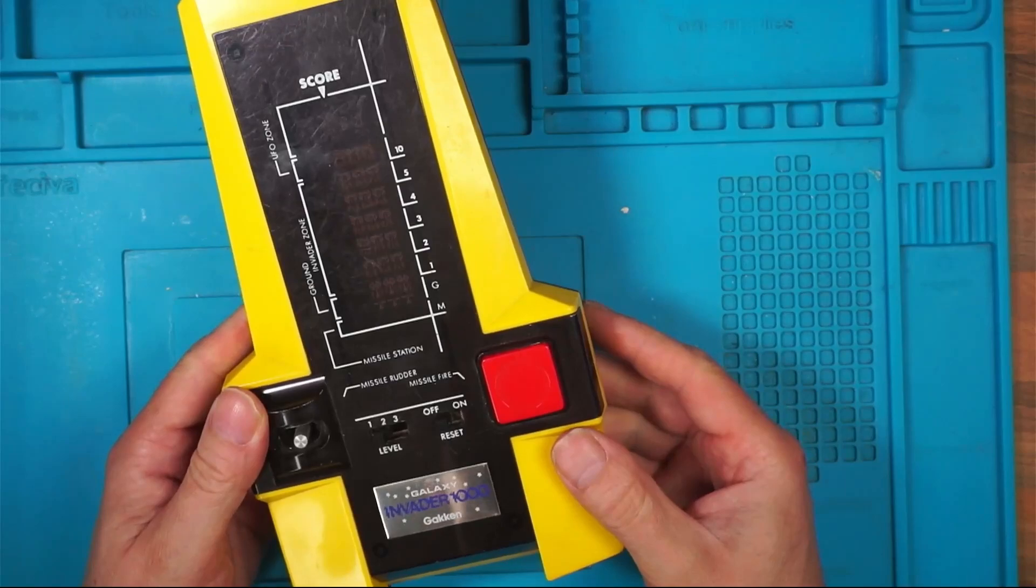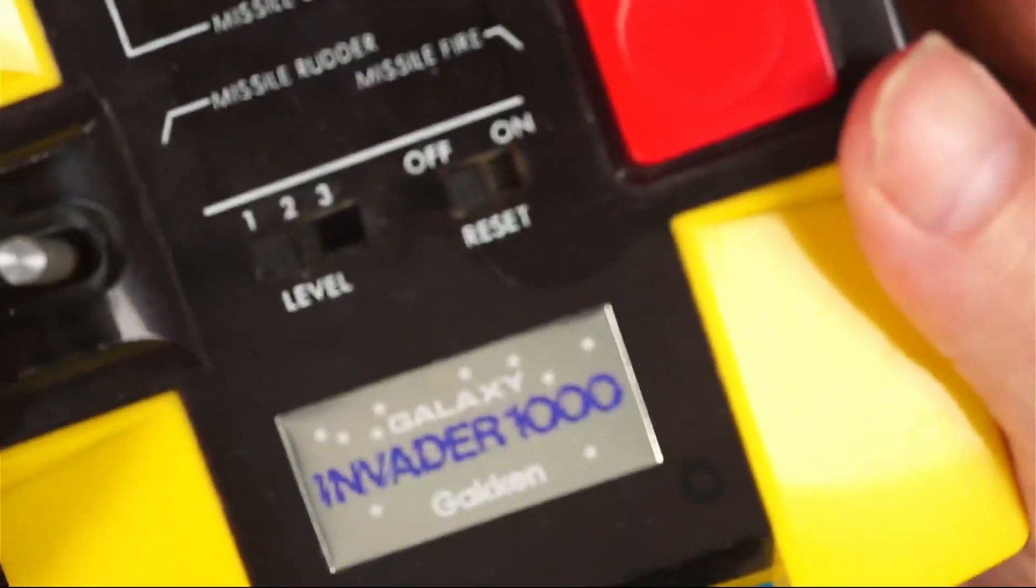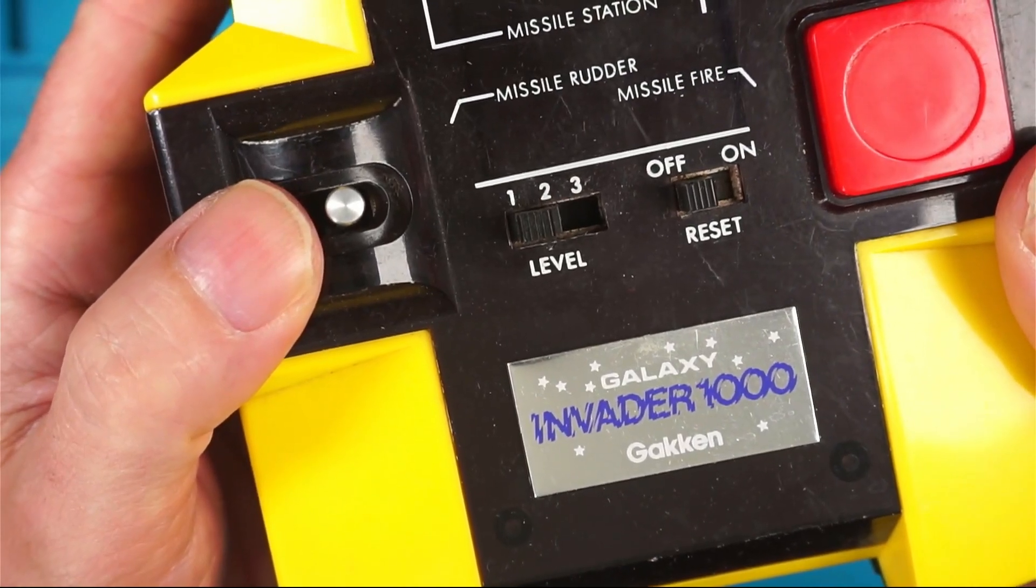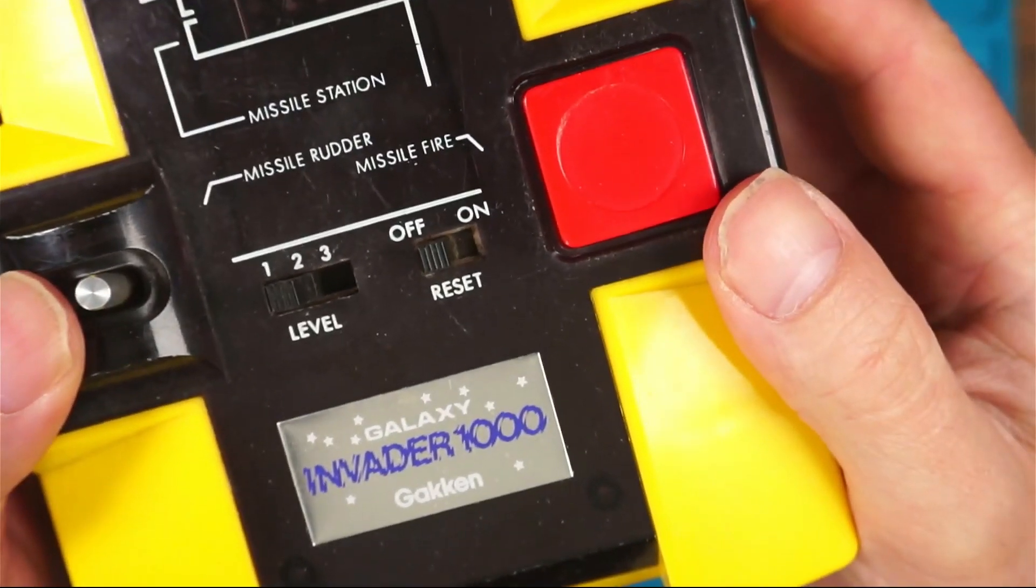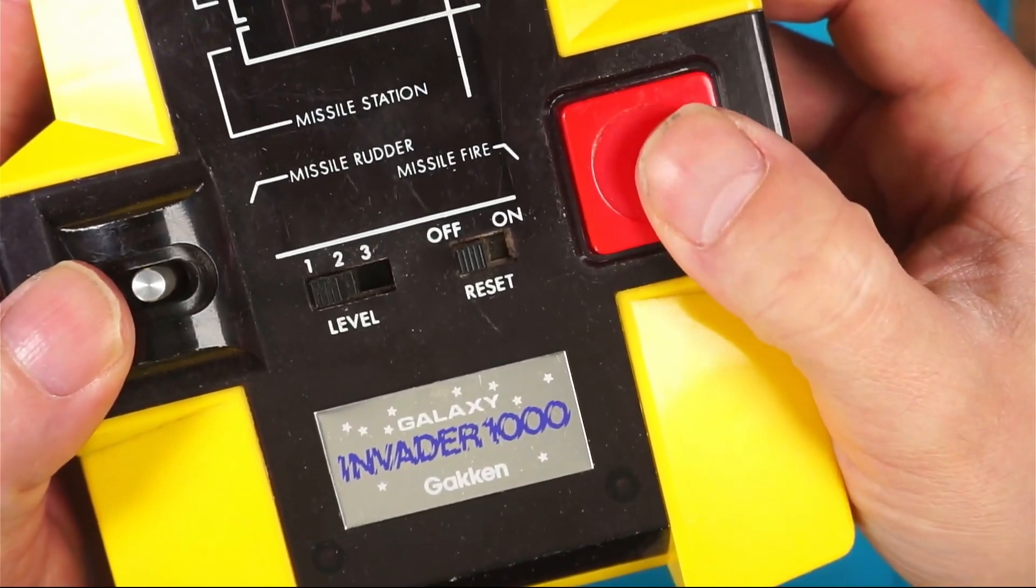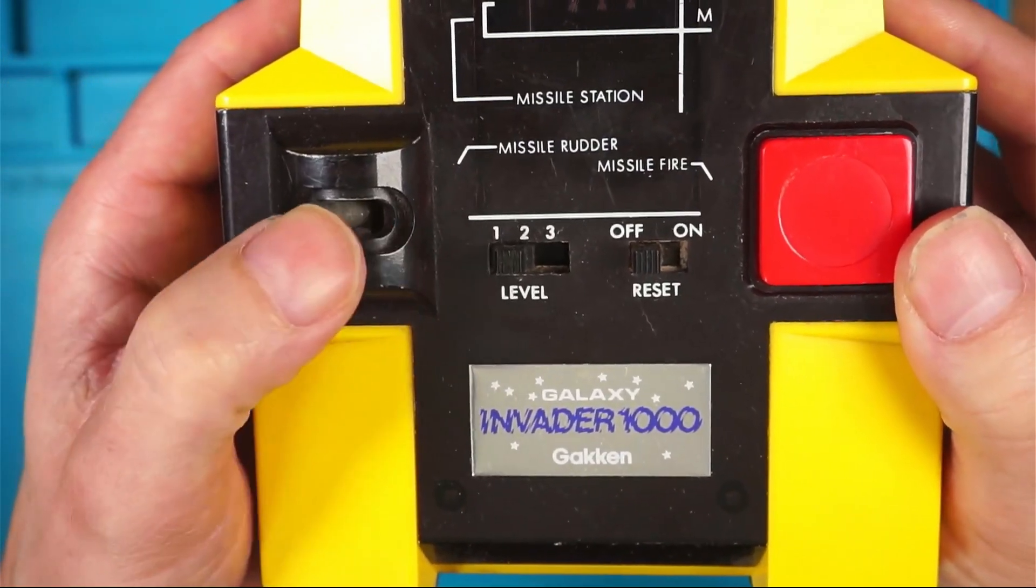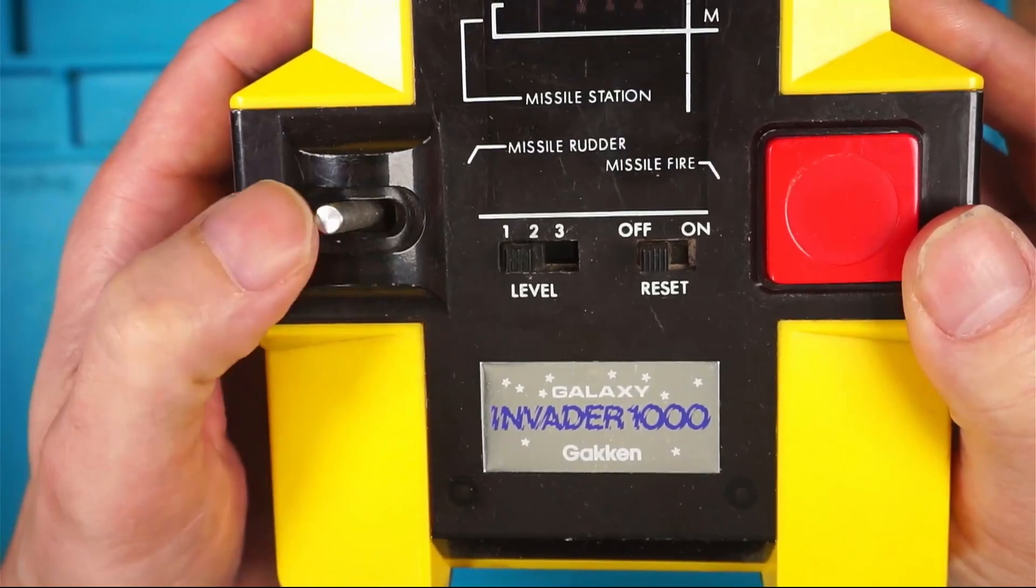So this was made in 1980. It's got an on-off switch, three levels of difficulty, a bright red fire button, and a joystick for left and right, which feels a bit spongy.